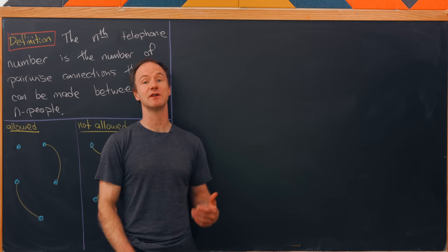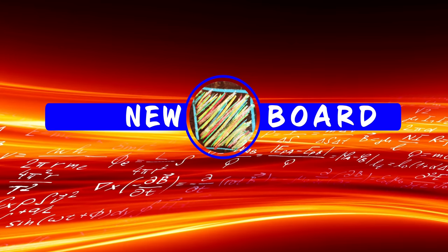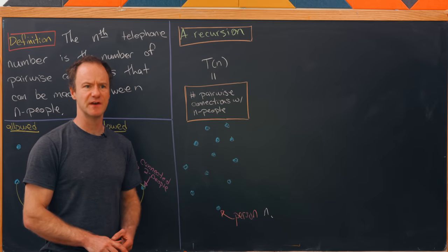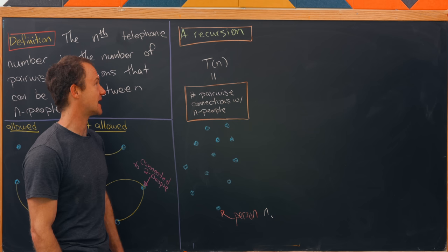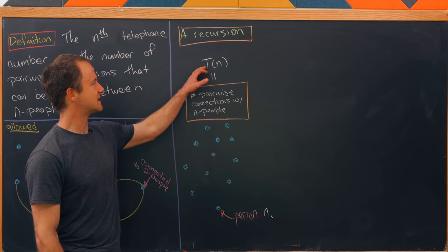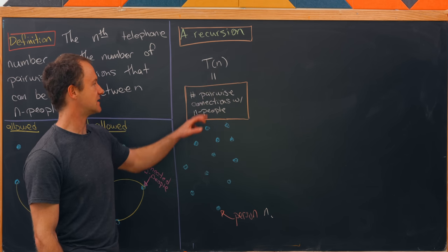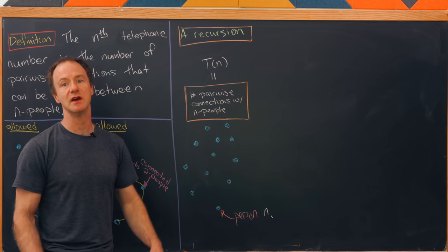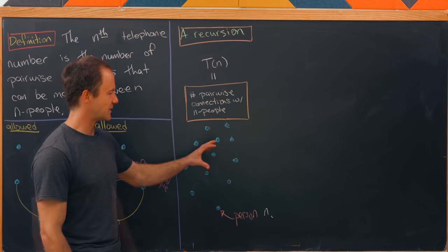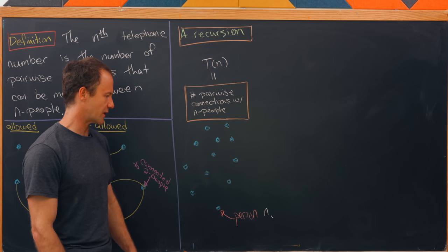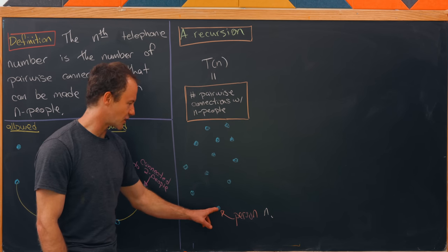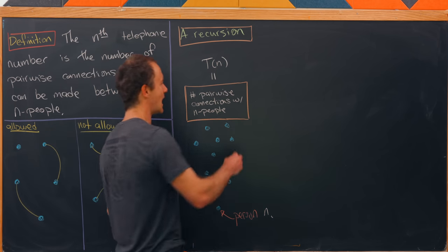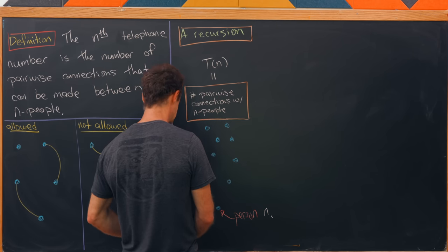Now let's build our generating function. Building it will start with a recursion, which we'll develop using standard counting techniques. Recall that t(n) is the number of pairwise connections between n people — t(n) is our telephone number. We have a picture showing person n and everyone else.